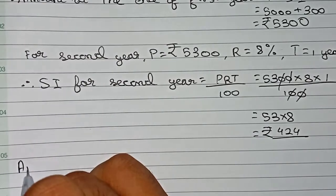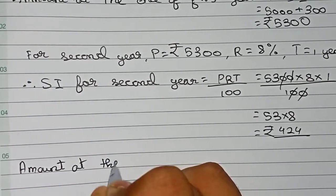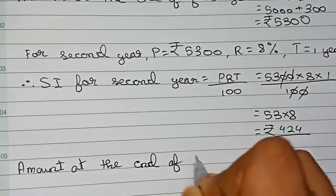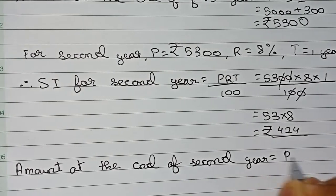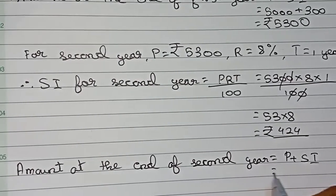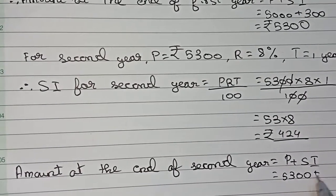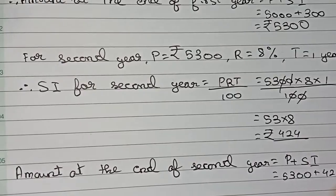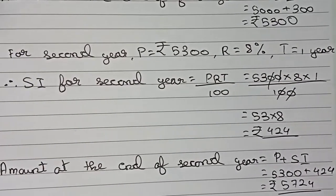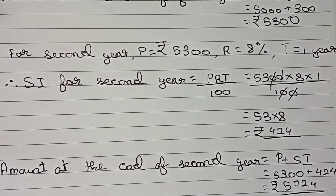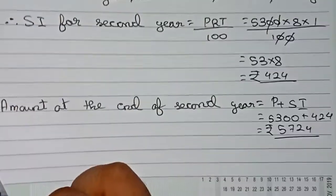The amount at the end of the second year will be principal plus SI, so 5300 plus 424, which equals rupees 5724. Therefore this is the amount at the end of the second year. Now the last part is to find the compound interest.